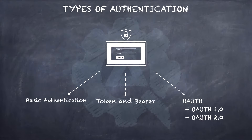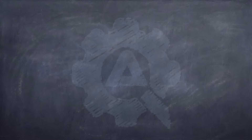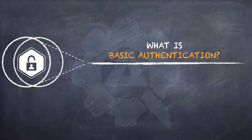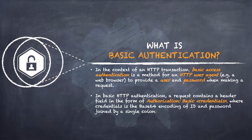We will learn about OAuth in due course of time, but right now it is not under the scope of this particular tutorial. Let us learn about basic authentication in more detail. The credentials for an HTTP basic authentication scheme are transmitted in the form of user ID and password, and they are encoded in base64.